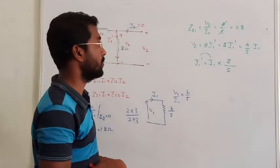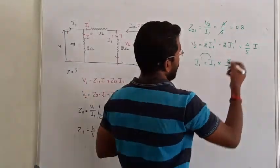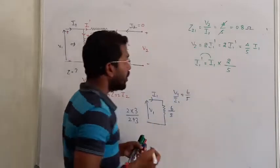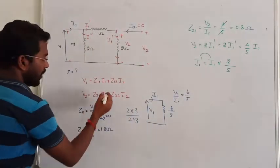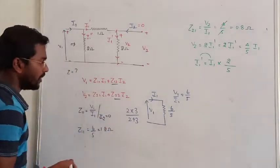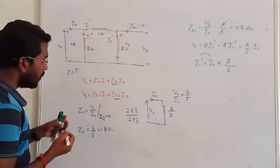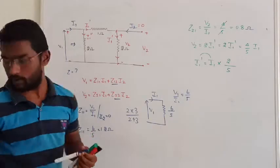If I substitute, 2 into 2 is 4, so that will be 4 by 5 into I1. So V2 and I1, you will get 4 by 5, or we can say 0.8. That is how we are bringing the relation between V2 and I1. Now we know Z21 and Z11.